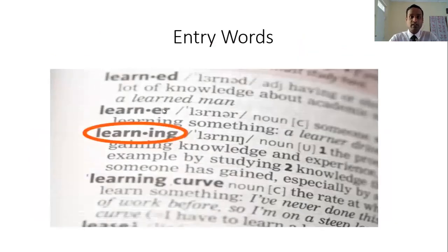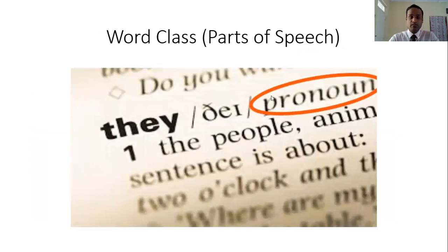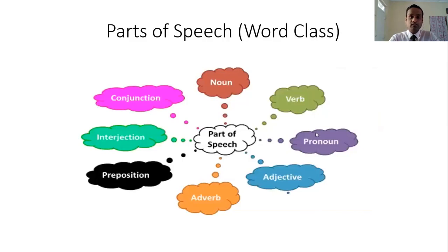The first one: entry words. Entry words are the words which are listed in a dictionary — they are in bold text. Word class, otherwise parts of speech: every word in a dictionary comes with a word class. For example, the word 'they' — that is the entry word, and its word class is pronoun. Like that, there are many word classes: noun, verb, pronoun, adjective, adverb, preposition, interjections, and conjunctions.